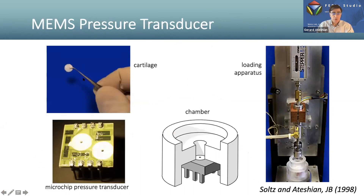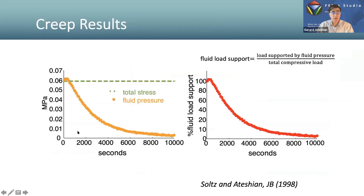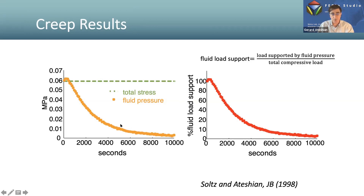To understand frictional contact, we review the physics of articular cartilage. A disc of cartilage is placed in a confining chamber, loaded with an indenter, and total load is measured using a load cell, while fluid pressure is measured with a MEMS pressure transducer. In a creep analysis under constant stress, the fluid pressure initially matches the applied stress, then subsides to zero over time. This is the experimental confirmation of porous media mechanics: fluid pressure rises on loading, then decreases as fluid flows out.